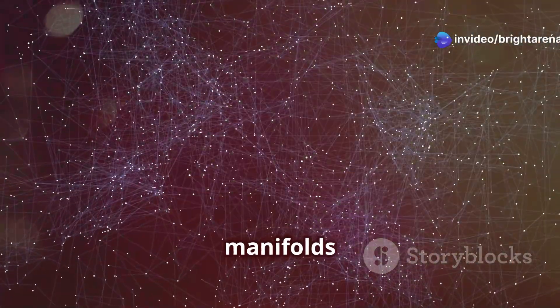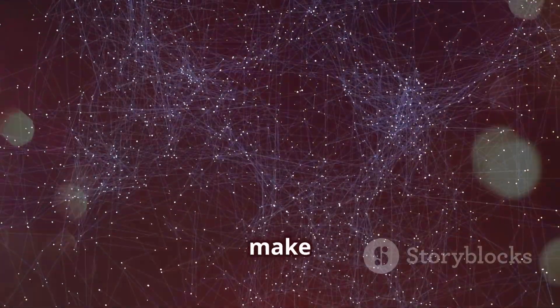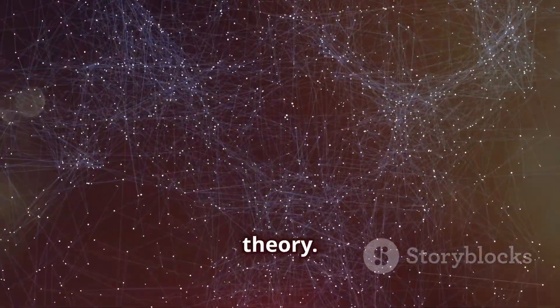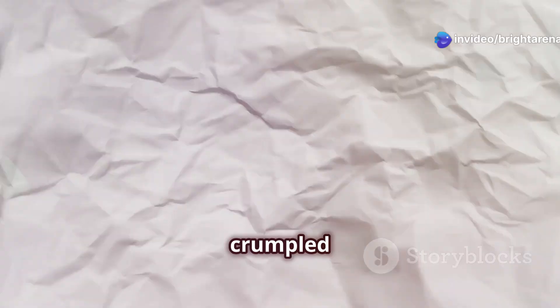Calabi-Yau Manifolds are incredibly intricate, with properties that make them suitable for compactifying the extra dimensions required by string theory. These shapes can be visualized as multidimensional surfaces with complex curvature, much like a crumpled piece of paper with hidden folds and twists.